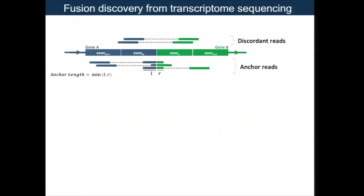There are two pieces of evidence that we need to make a fusion call: the reads that are mapping to two different genes, called discordant reads, and the reads that are mapping to the fusion junction, called anchor reads. The specificity of this anchor read is determined by the anchor length, which is the minimum of the two overhang regions, the left and right.